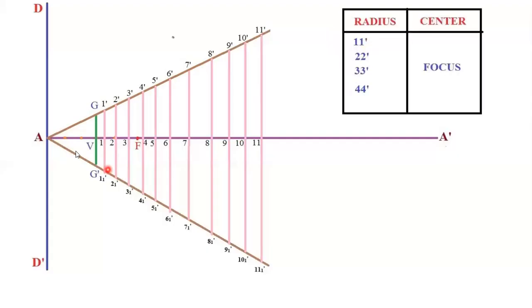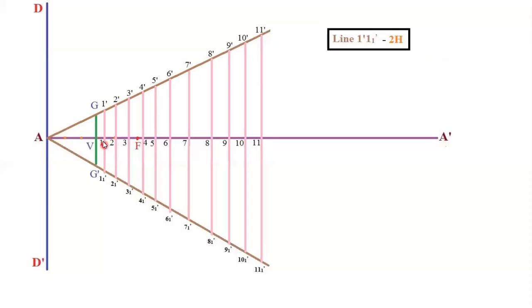You will get certain points on the axis — name them 1, 2, 3, 4, 5 and so on. You will get points on the AG extension line — name them 1', 2', 3' and so on. Points on the AG' extension line should be named 1₁', 2₁', 3₁'. The naming should not be repeated and you should not get confused.